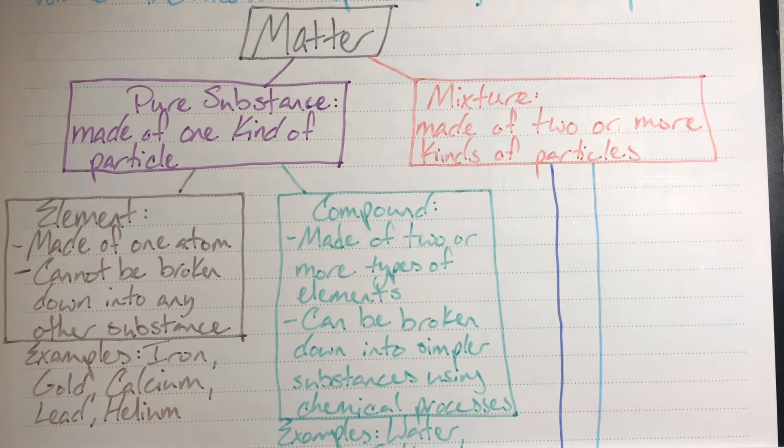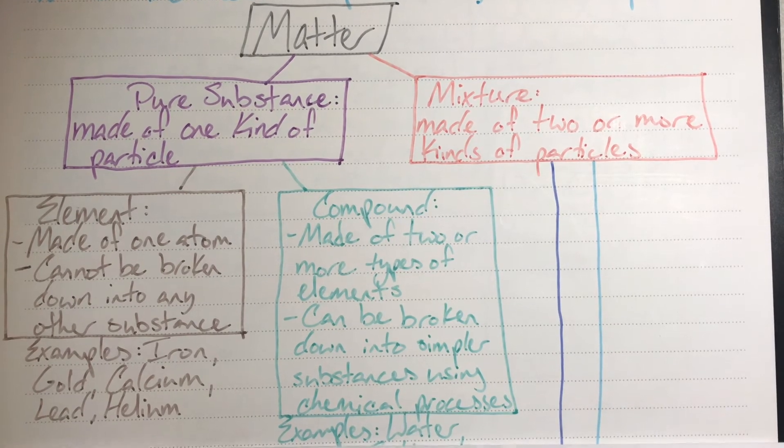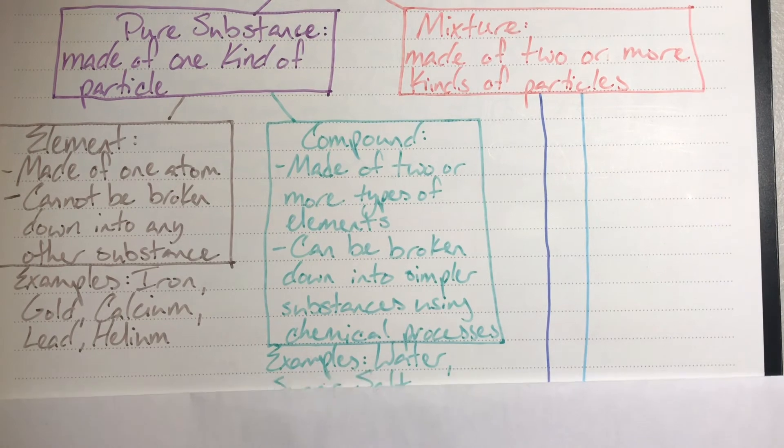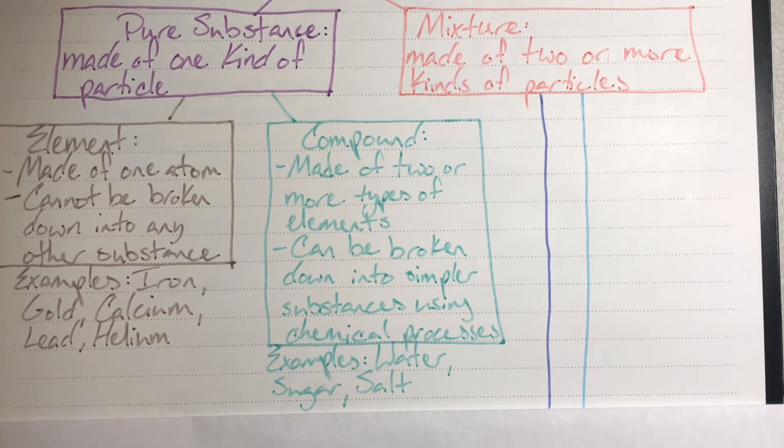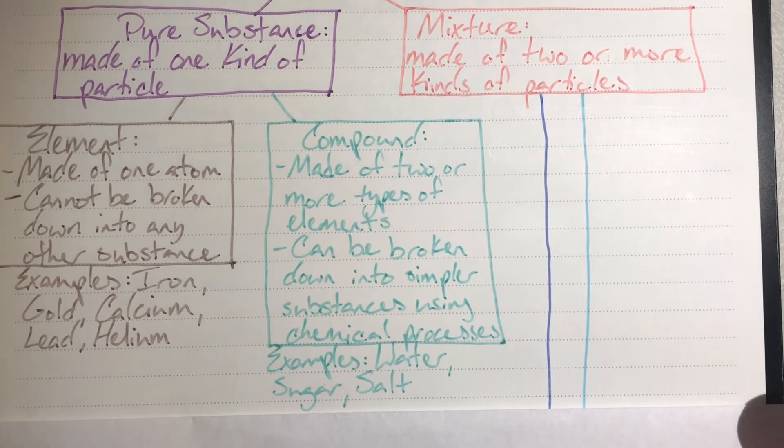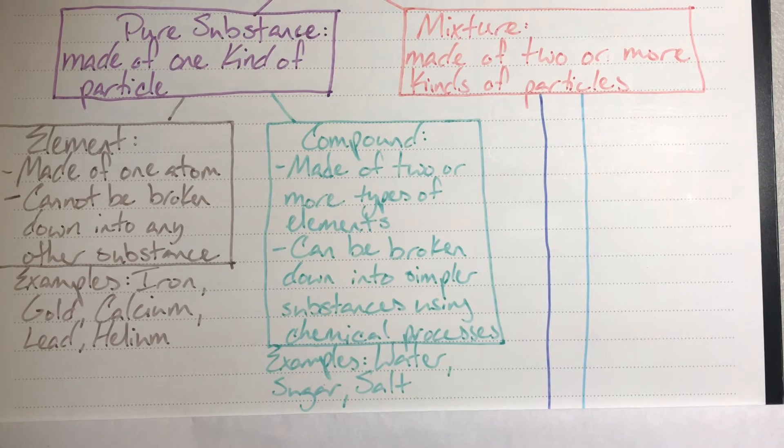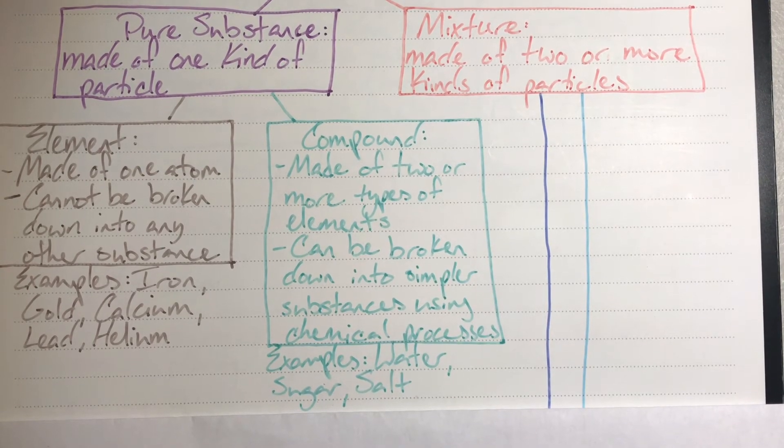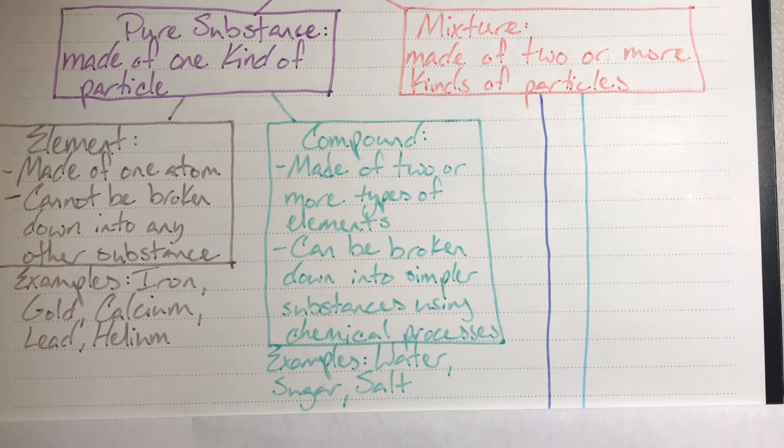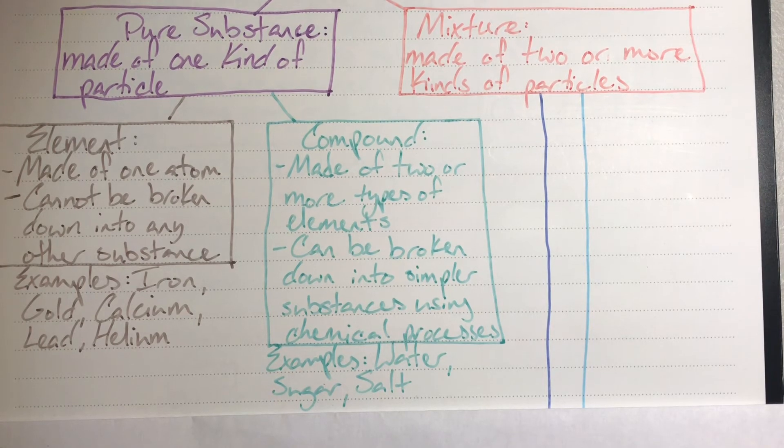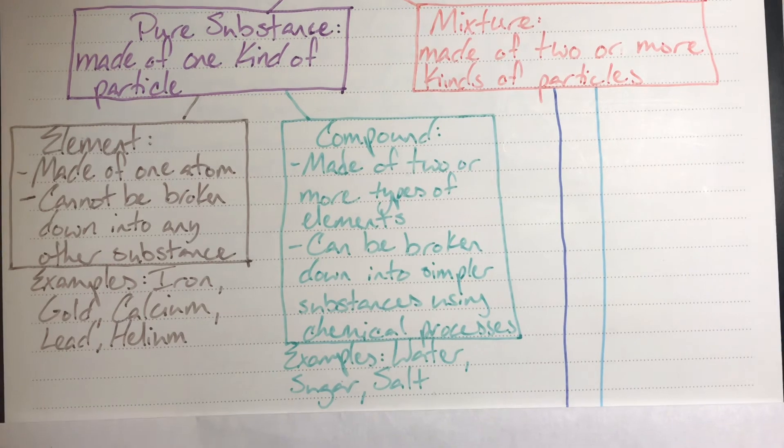Examples of compounds—remember that these are multiple elements bonded together chemically—could be water or dihydrogen monoxide, two hydrogens one oxygen, sugar or glucose C6H12O6 where we have six carbons, 12 hydrogens, and six oxygens bonded together, or table salt or sodium chloride NaCl.